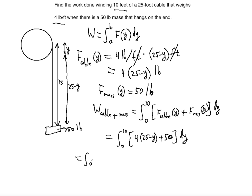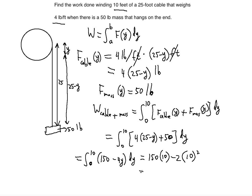Simplifying the integrand: 4 times 25 is 100, plus 50 gives 150, minus 4Y — so we integrate (150 minus 4Y) dy from 0 to 10. We can ignore the lower limit of 0 when evaluating. At the upper limit: 150 times 10 gives 1,500, and integrating 4Y gives 2Y squared, so minus 2 times 10 squared equals 200. That gives us 1,500 minus 200 equals 1,300 foot-pounds.